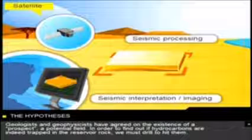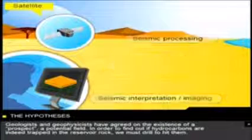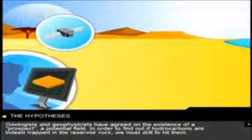Geologists and geophysicists have agreed on the existence of a prospect, a potential field. In order to find out if hydrocarbons are in this trap in the reservoir rock, we must drill to hit them.